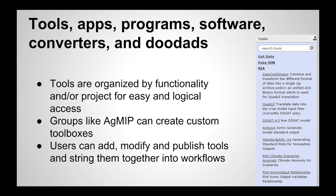Tools are organized into groups – you might call them tool sheds or toolboxes. They can be organized by functionality, like the get data tools, or by projects. I've shown the RIA set of tools here, which are specific to using the RIA workflow. Groups like AgMIP can create their own custom toolboxes and direct their users to them. Users can also add, modify, and publish tools and string them together into workflows.